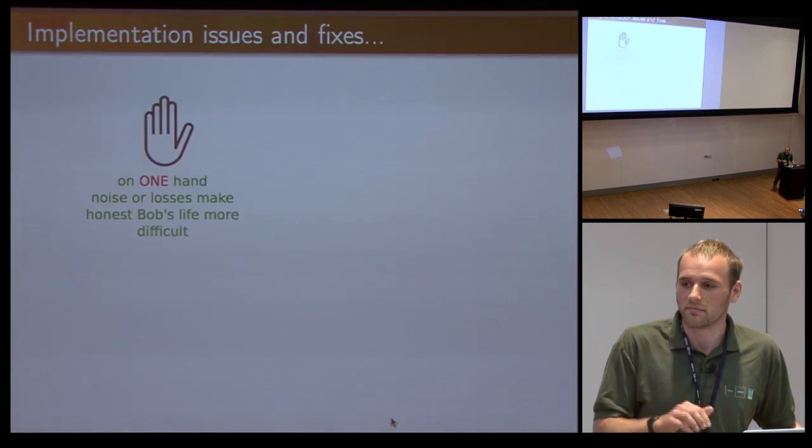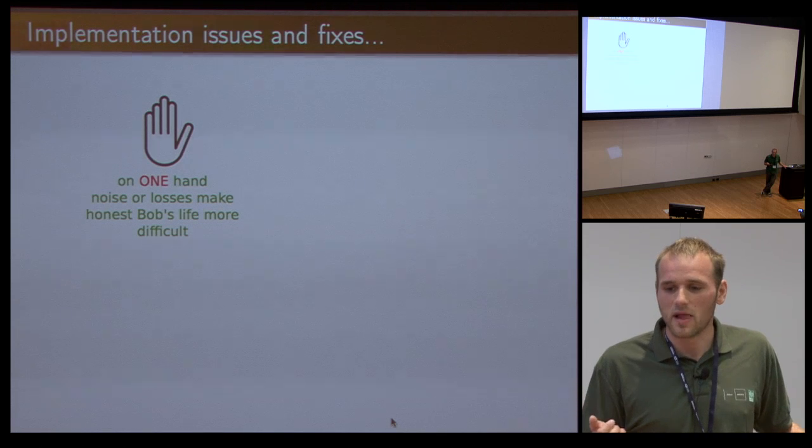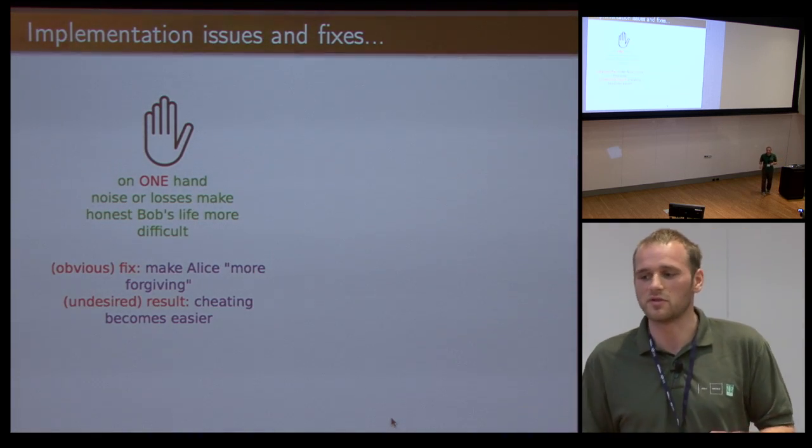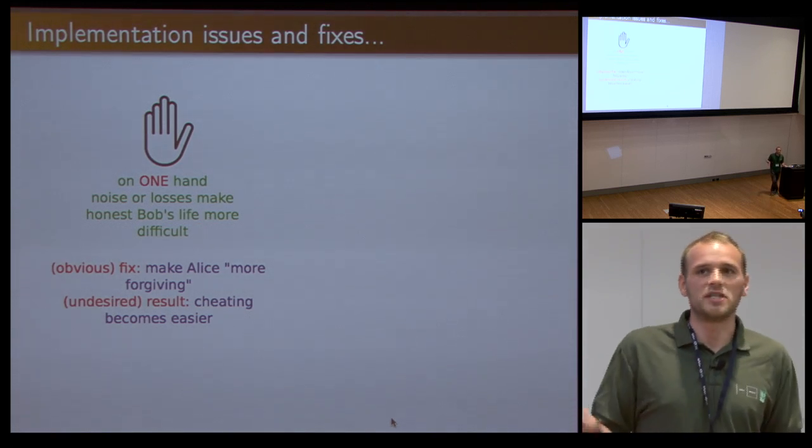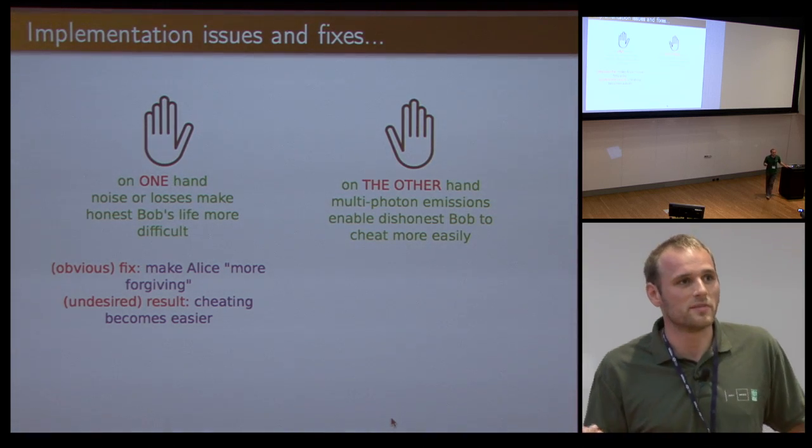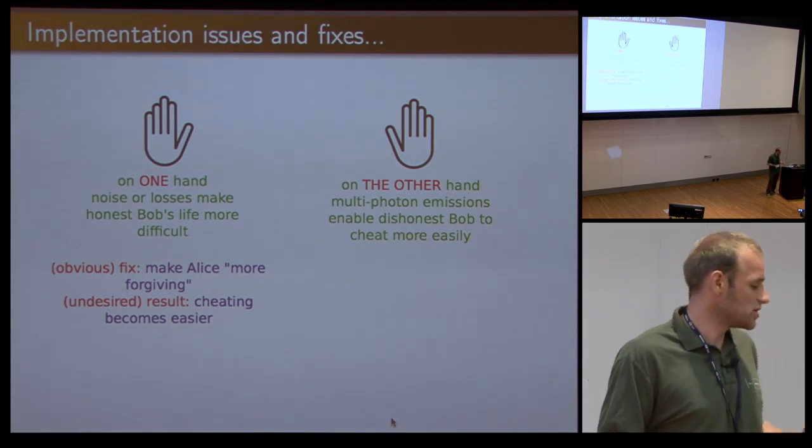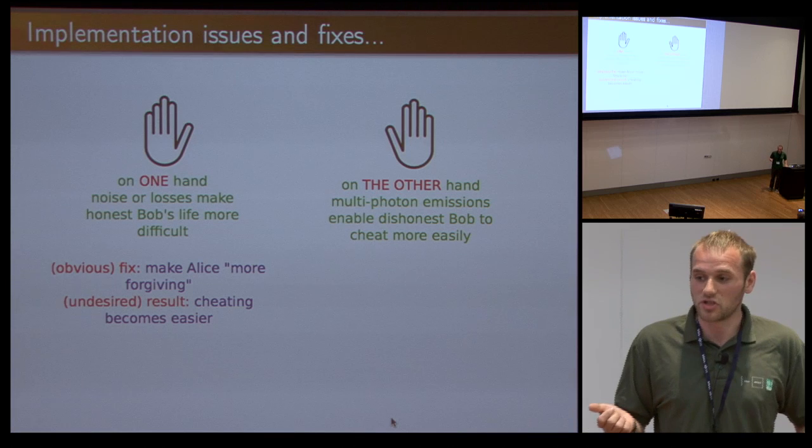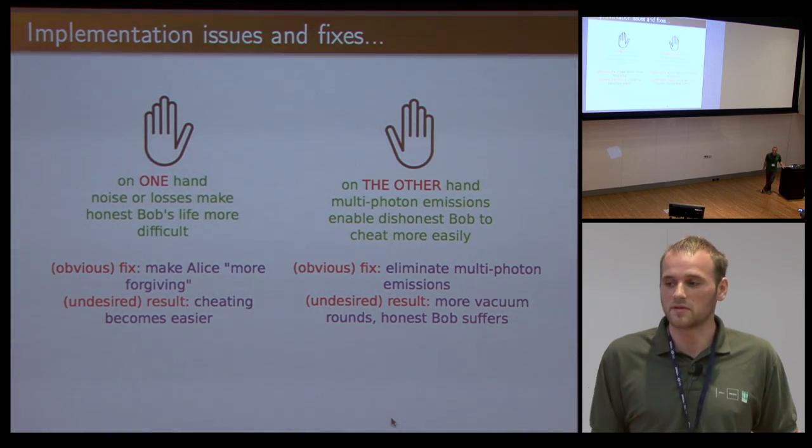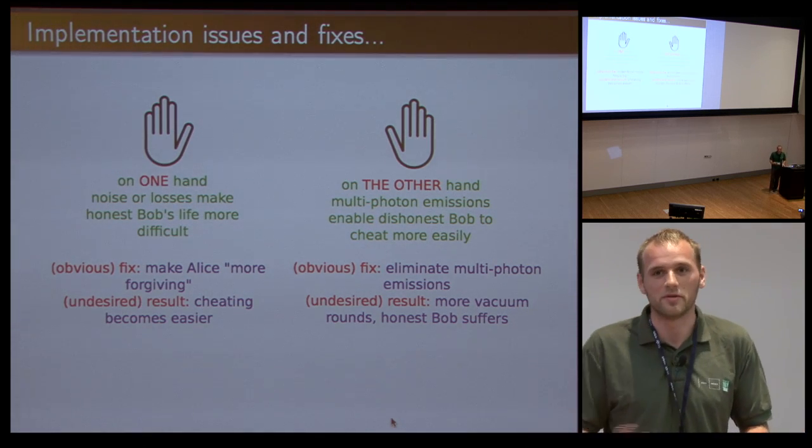Now you think, how does this affect my protocol? On one hand, noise or losses will make honest Bob's life more difficult, so the obvious fix would be to make Alice more forgiving. Maybe she will tolerate some losses, maybe she won't check the whole string, just part of it. This kind of works, but then obviously cheating becomes easier. On the other hand, the multi-photon emissions are really dangerous, because if Bob receives two photons in the same state, he can measure one in the computational basis, the other in the Hadamard basis, and he actually obtains both correct outcomes, so then he can cheat perfectly. You have to decrease the mean photon number to eliminate them, but then you end up with a lot of vacuum rounds, so you emit nothing most of the time.